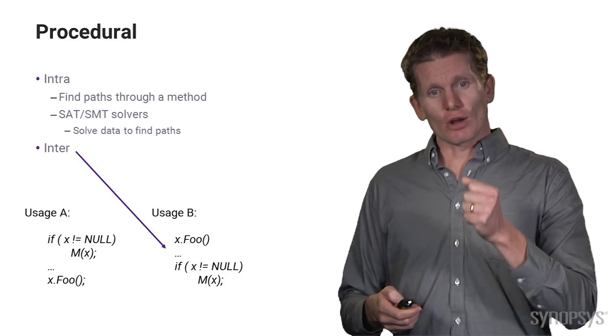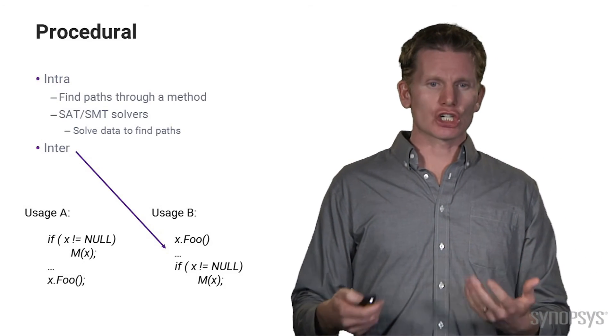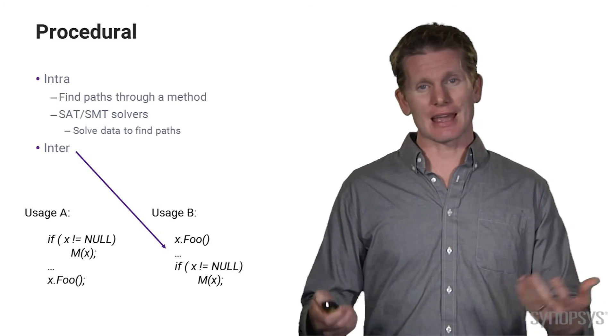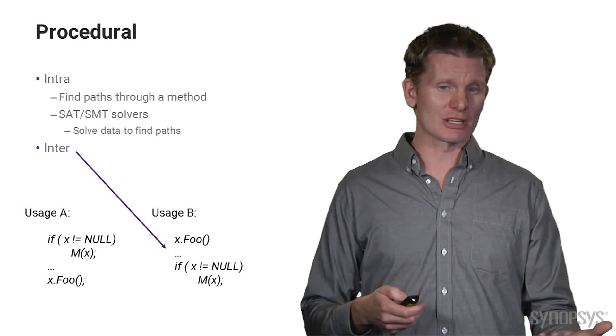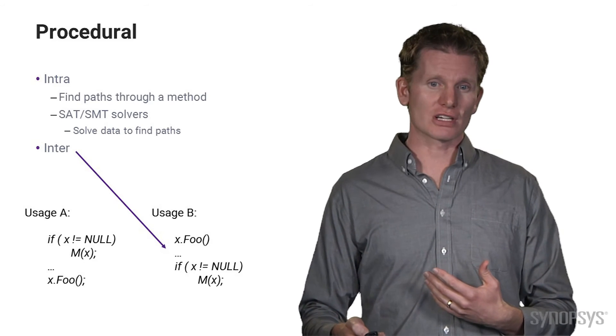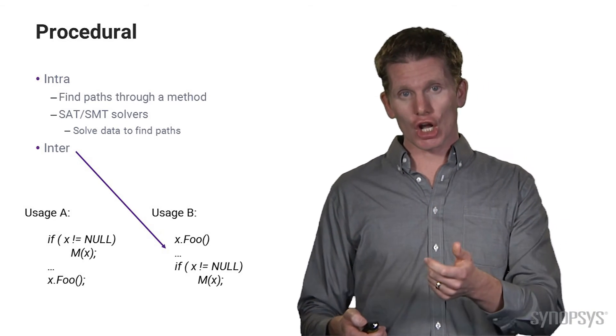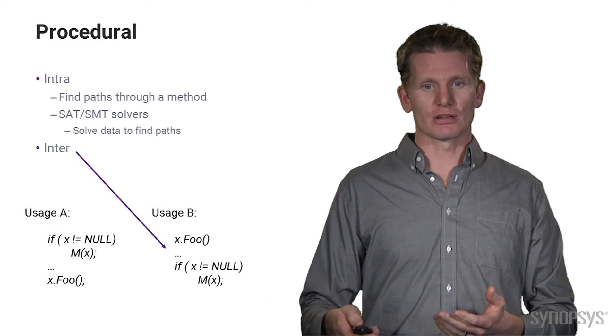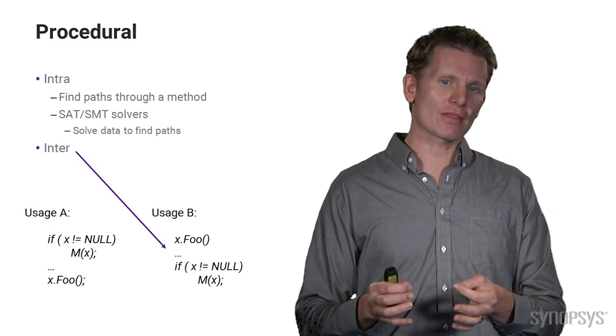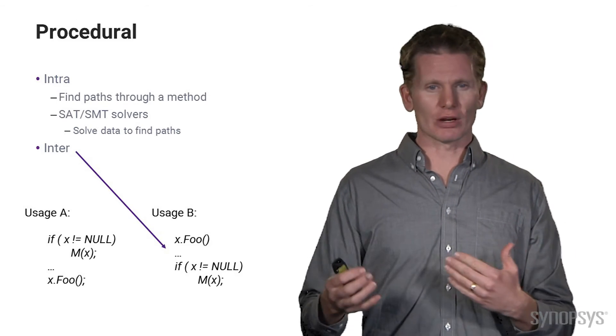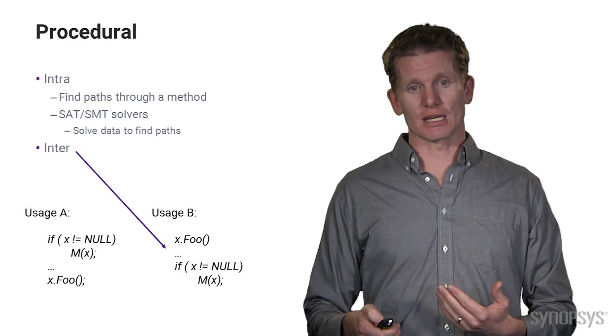Let's talk about another technique called procedural. Intra and inter procedural, where we use solvers to find new paths through data and examine the use of objects or elements within those paths. So, for example, here we have an object X. We check to see if it's null. And if it's not, then we can use it. Where later on, we use that same method, but we forget to check that it's null or we do it later. And that's a mismatch that we're able to find with that type of technique.